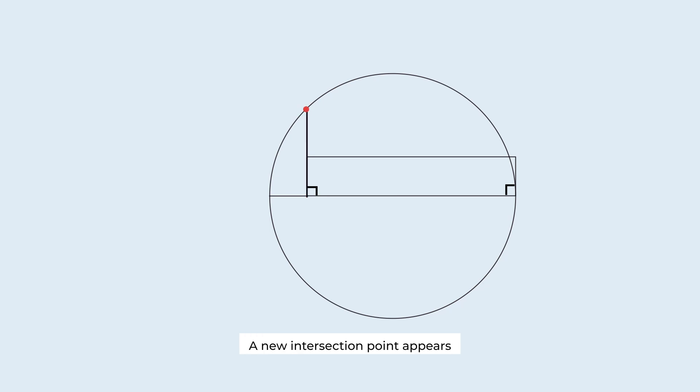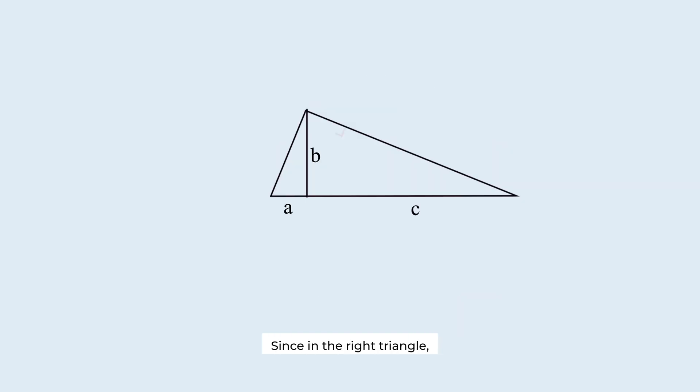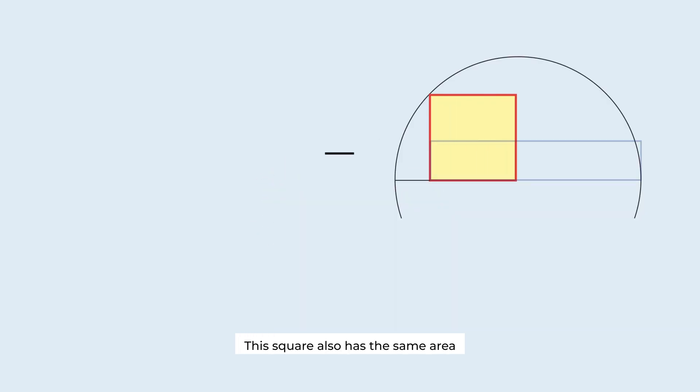A new intersection point appears where it meets the circle. Now, draw a square using this segment as one of its sides. This is the square with the same area as the rectangle. Since, in a right triangle, the square of this length is equal to this length multiplied by this length, this square also has the same area as the shaded regions.